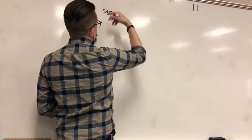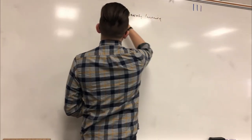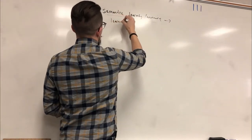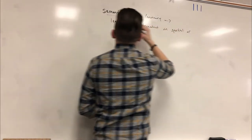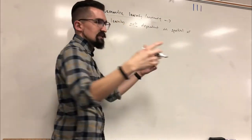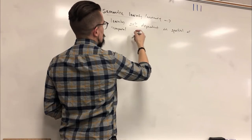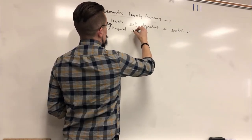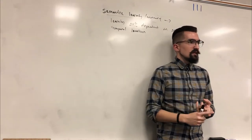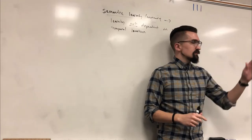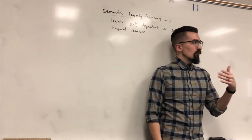Semantic learning — or semantic memory — is learning not dependent on spatial or temporal location. What I mean is we all know facts about things we haven't actually seen or been to, and we don't remember the specific day we learned them. We just gradually learn them over time through language, pictures, whatever. That's semantic learning and semantic memory — there's a whole bunch of facts you know without having actually been there.